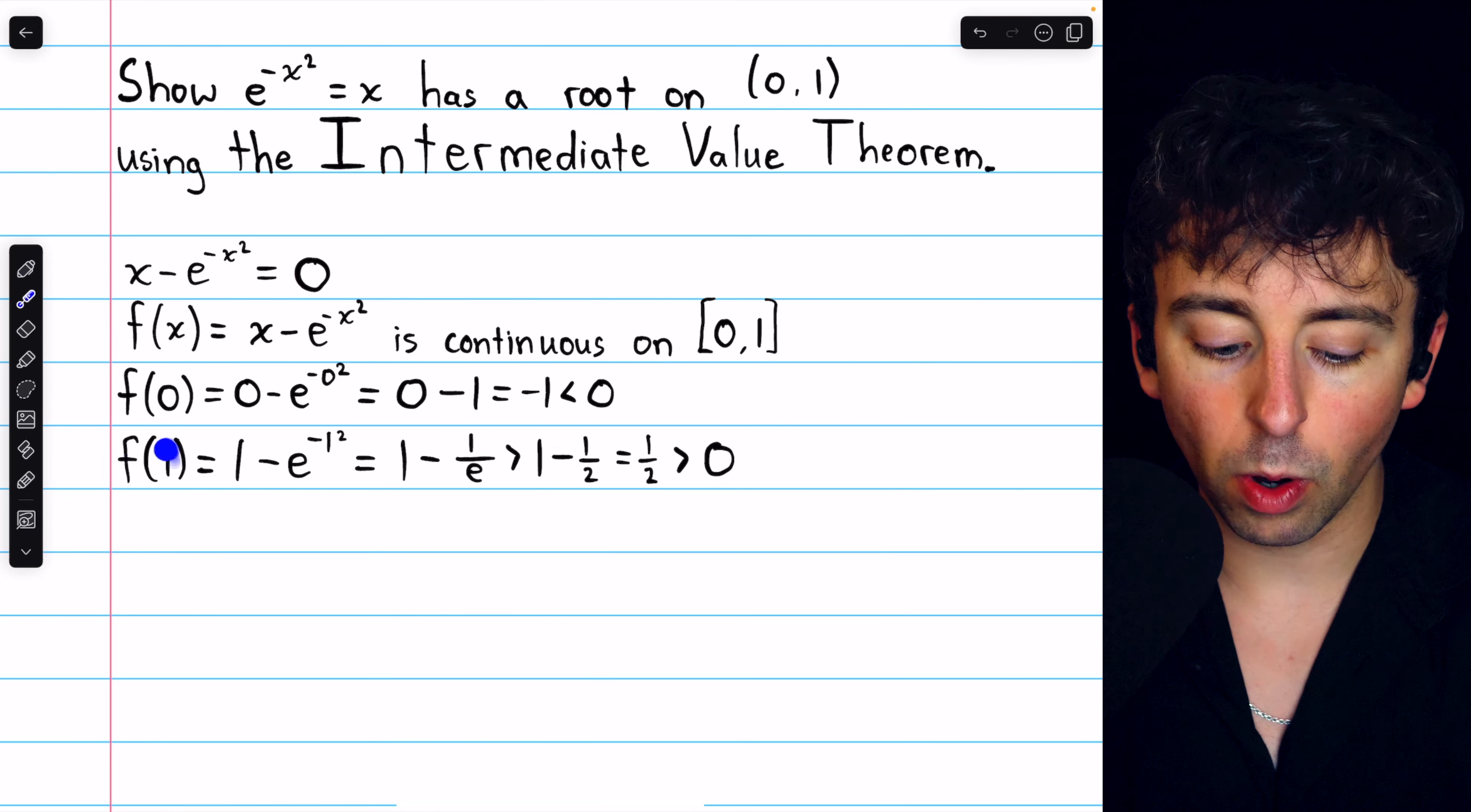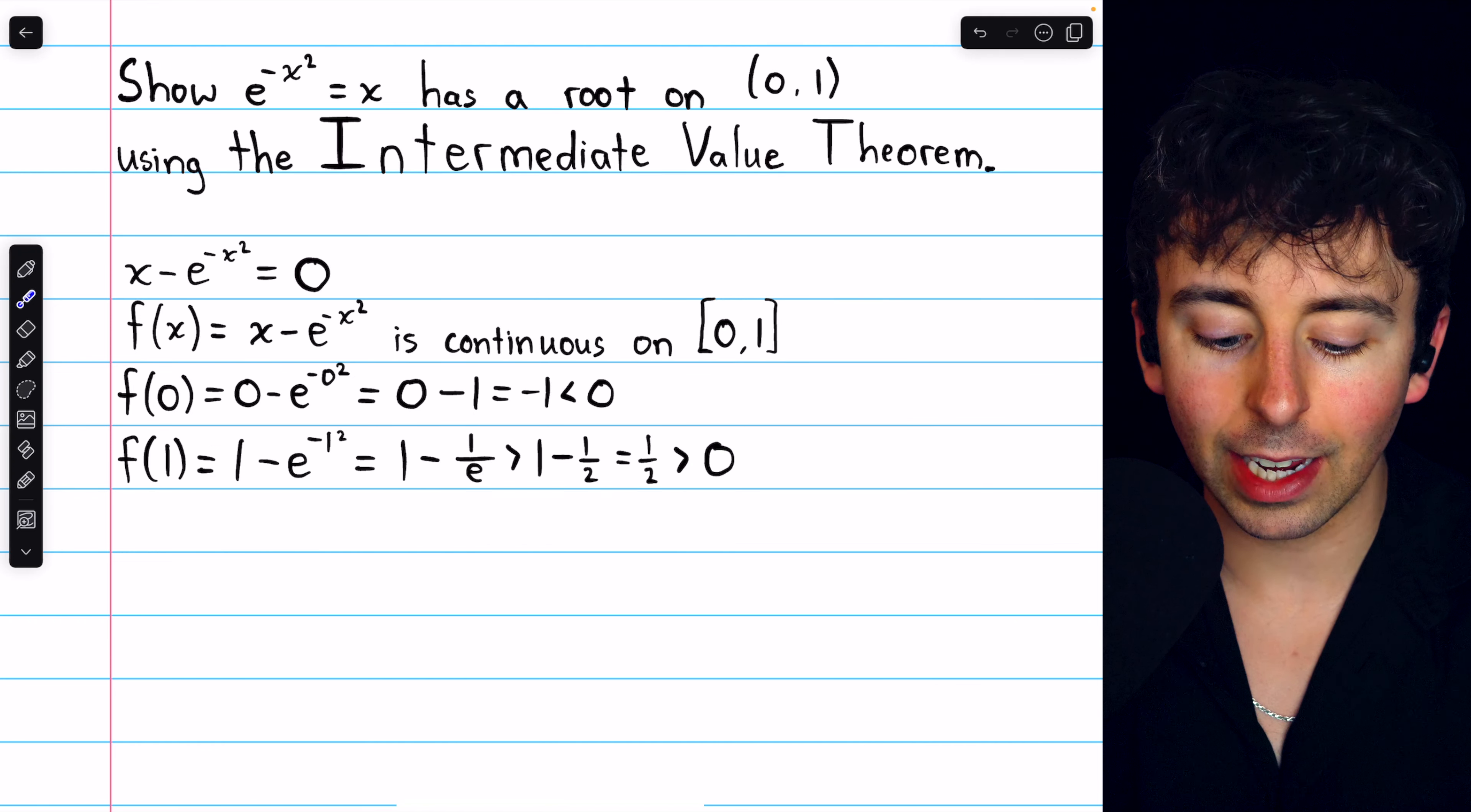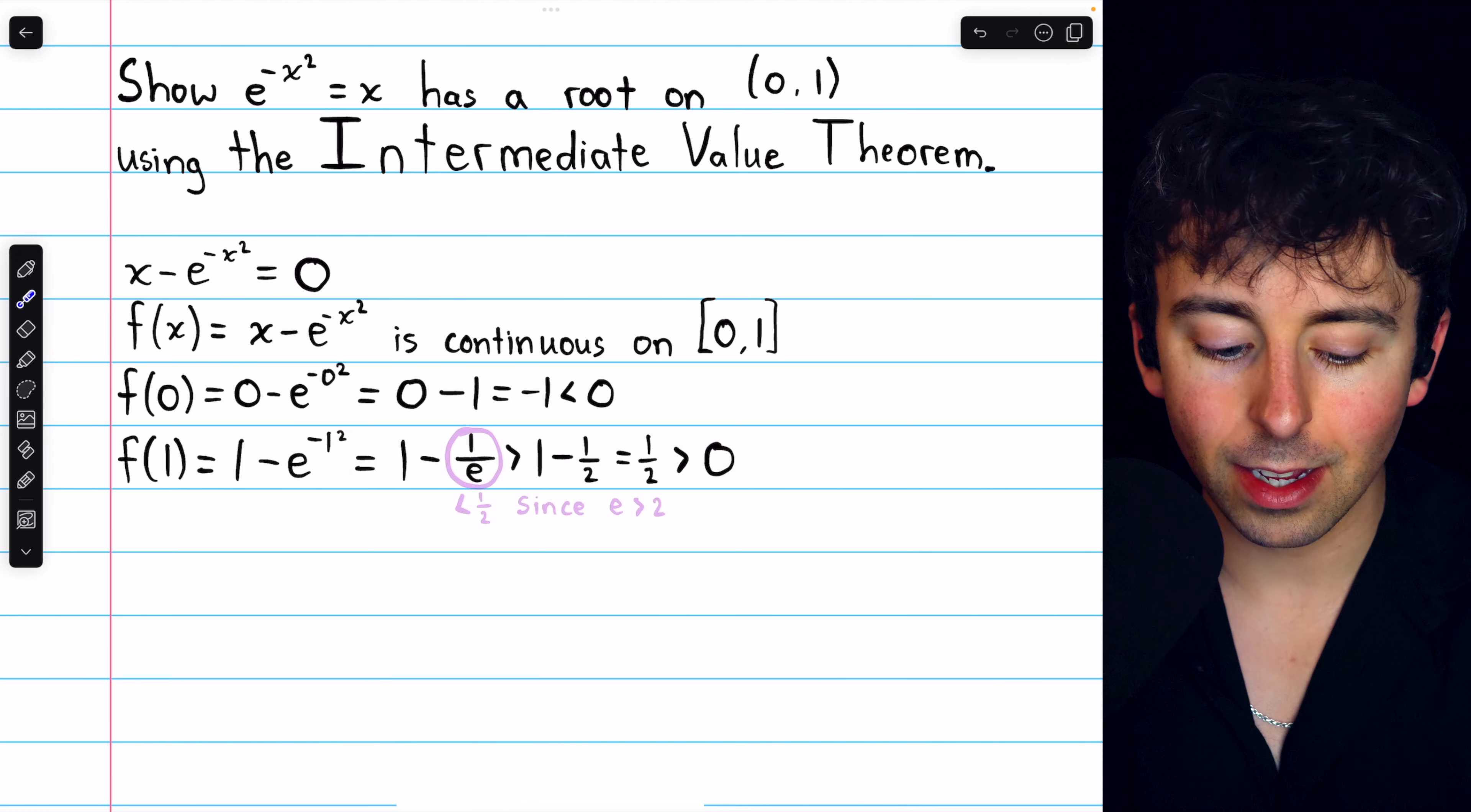Plugging that right endpoint 1 into our function, we have 1 minus e to the negative 1 squared, which is equal to 1 minus e to the negative 1, which is 1 over e.